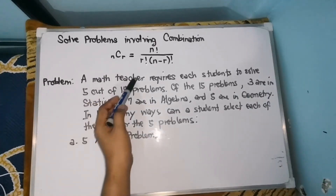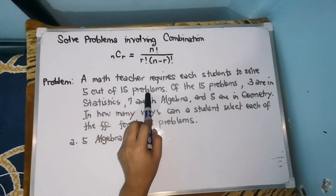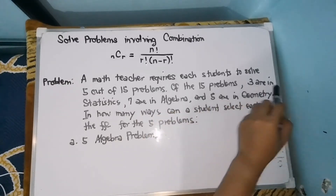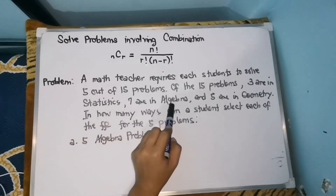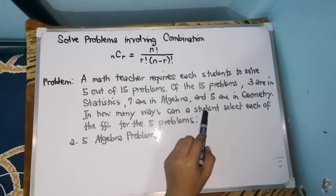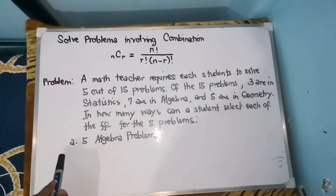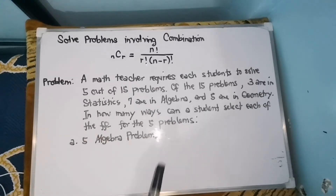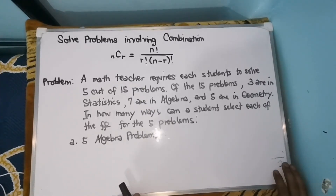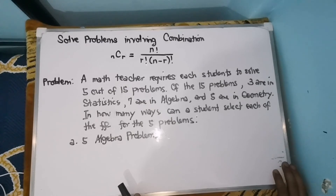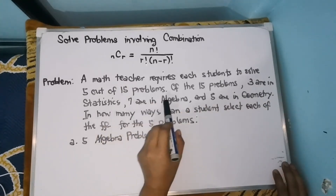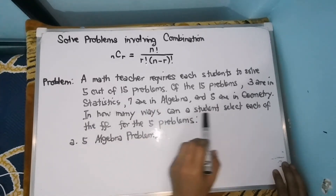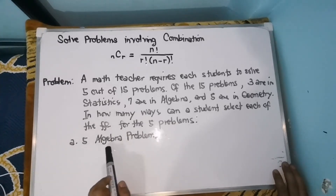For our last problem: a math teacher requires each student to solve 5 out of 15 problems. Of the 15 problems, 3 are in statistics, 7 are in algebra, and 5 are in geometry. In how many ways can a student select each of the following for the 5 problems? Part A: 5 algebra problems. This is an example of combination since order is not significant.